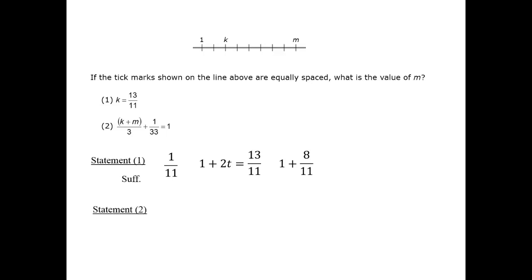Statement 2 could be simplified by multiplying both sides by 33 and isolating k plus m. More to the point is the fact that we can write other equations.